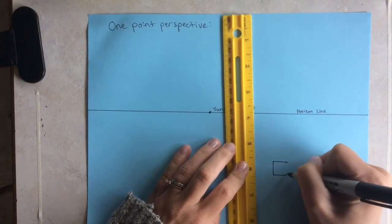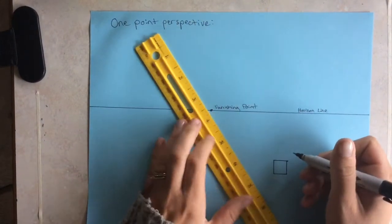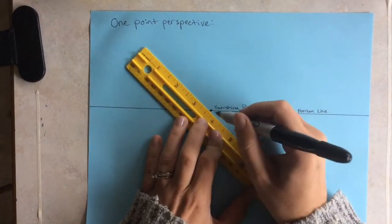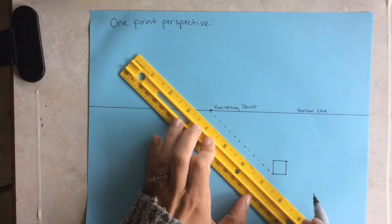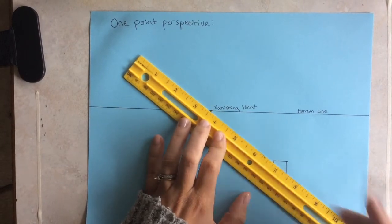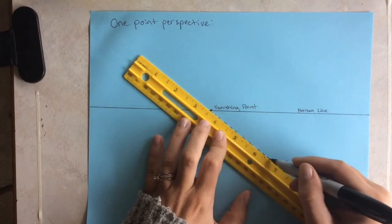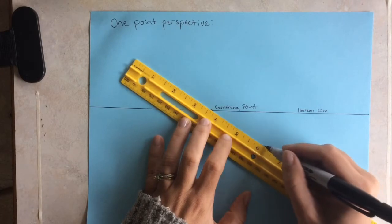Next, you want to draw a square and you can measure it out or you can just eyeball it and draw a square. Then you want to take each corner of the square and line it up to the vanishing point. Just take the corners that are closest to the vanishing point because we're doing a solid box.